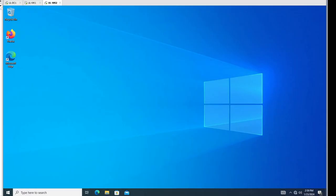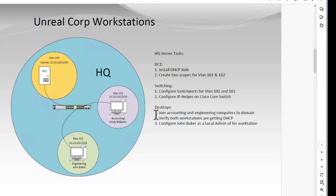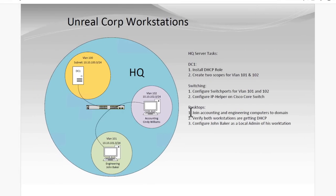We'll just browse out to the DC — not that you have to do this step, but I do like to see that NETLOGON and SYSVOL are available. That finishes up those two workstations. We verified that we had IPs coming onto VLAN 101 and 102. Let's do the John Baker local admin — we can finish that out really quick.